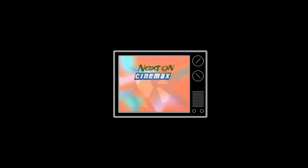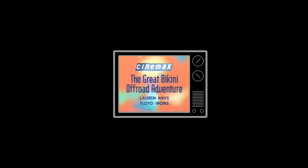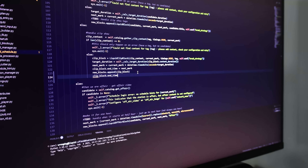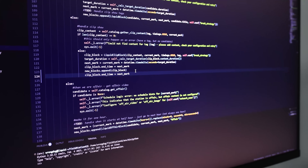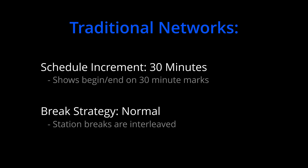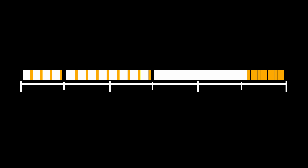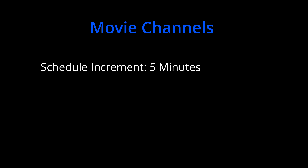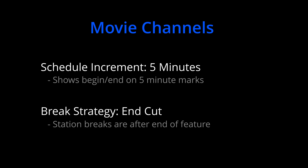With movie channels, though, the programming block is based on the movie's duration. The problem is that you still want promos and station identifiers between the feature content. To satisfy all these use cases, I introduced the concept of break strategies and schedule increments. With a traditional network channel, you would set up 30 minutes as your schedule increment and a normal break strategy — this will cause shows to buffer to the next 30-minute increment. A show with 22 minutes of content will be 30 minutes in duration after breaks and commercials; if it's 45 minutes of content, it will buffer to 60 minutes. With a movie channel, you could set a five-minute increment and an in-cut break strategy. This will cause the shows to buffer to the next five minutes, and all the buffer content will stay at the end of the show, so it plays between the feature content.